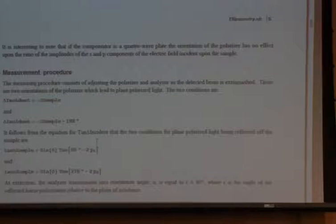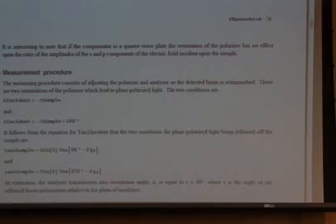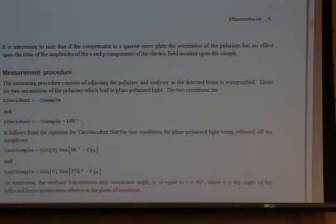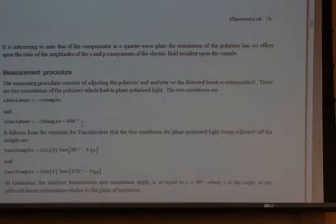In the measurement, we adjust the polarizer and analyzer to extinguish the beam reflected off the sample. There are two polarizer orientations that produce plane-polarized light: one where we exactly cancel the delta introduced by the sample (delta_incident = −delta_sample), and another with a 180-degree phase difference, because linear polarization occurs at either zero or 180 degrees of phase between S and P.